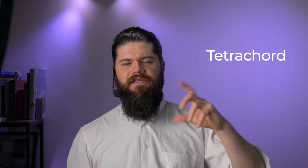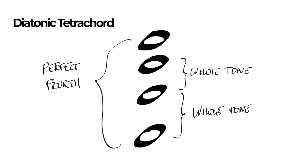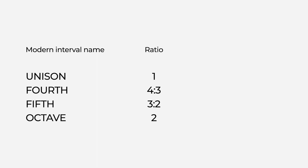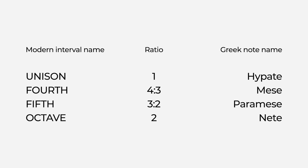The intervals that today we call fourth, fifth, and octave were known by the ancient Greeks and even by the Mesopotamians thousands of years ago. For the ancient Greeks, the most important interval was today's perfect fourth, which was divided by two other notes in between and formed the so-called tetrachord. The first note was called the hipate, the fourth mese, the fifth paramese, and the octave nete.